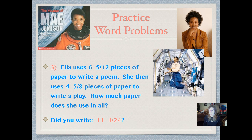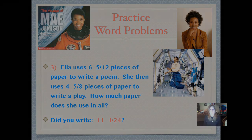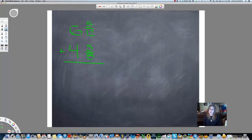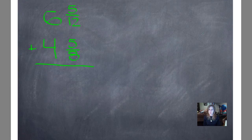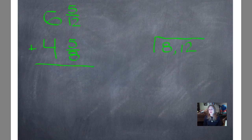Did you write 11 and 1 twenty-fourths? My answer is not completely correct. Why? That's right. I didn't write it in a complete sentence. In order for my answer to be correct, when I see words, I have to answer in words. So, I should have written, Ella used 11 and 1 twenty-fourths pieces of paper in all. That would have been a great answer. I hope you did that. So, I've already written them down vertically. I'm going to put both of my denominators, because they're different, in a cake to find the LCM. So, I ask myself, what divides evenly into 8 and 12? And I'm going to go with 4.